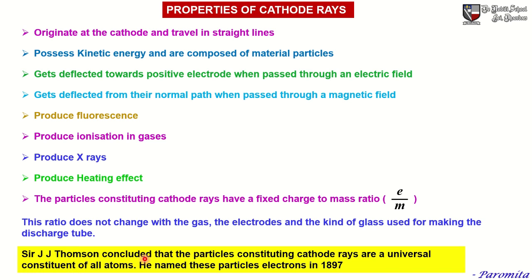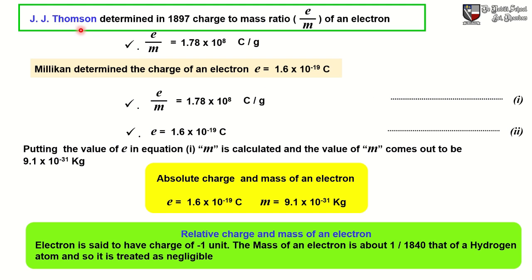Sir J.J. Thompson concluded that the particles constituting the cathode rays are universal constituents of all atoms, and he named these particles as electrons in 1897. Sir J.J. Thompson determined the charge-to-mass ratio of an electron. According to J.J. Thompson, E/M is equal to 1.78 × 10⁸ coulomb per gram.